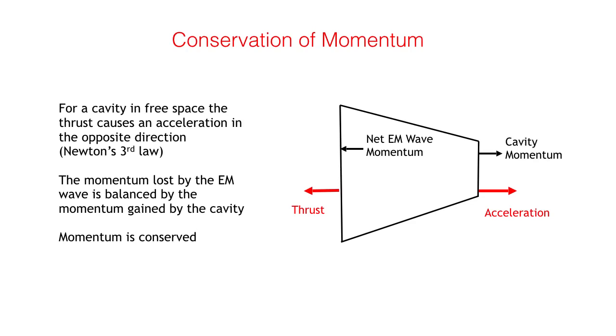For an unconstrained cavity, Newton's third law says that this force must be balanced by an acceleration in the opposite direction. This effect has been consistently measured in experiments. Thus the momentum gained by an accelerating cavity in one direction is balanced by the momentum lost by the electromagnetic wave in the other direction.